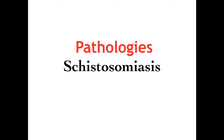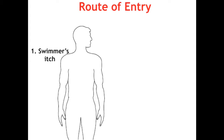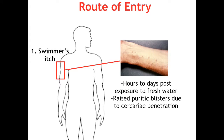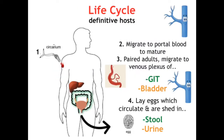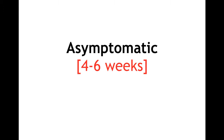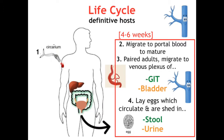For the pathology of schistosomiasis, we're going to follow the same time order as their life cycle in humans. Starting at their route of entry — direct penetration of skin — the blood flukes can cause swimmer's itch, which occurs hours to days post-exposure to contaminated fresh water. It presents as raised, periodic blisters at the site of cercaria penetration, usually self-resolves and can go unnoticed. After entry, they migrate to the portal system to mature, which takes four to six weeks, as they become male or female and pair.